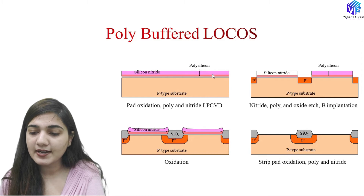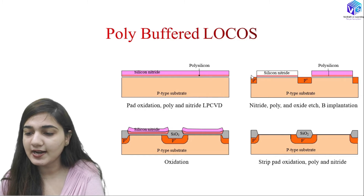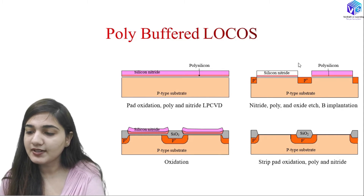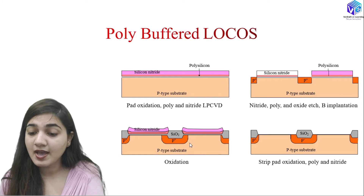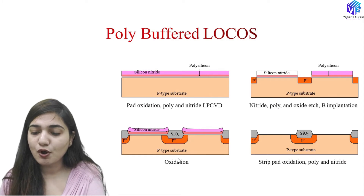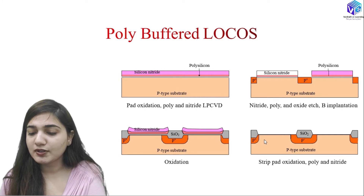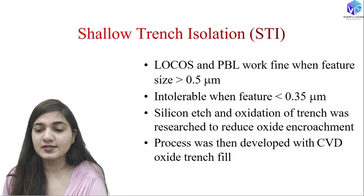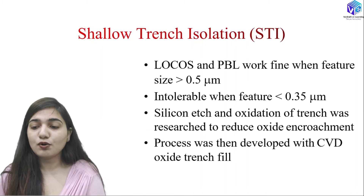In poly-buffered LOCOS we have: pad oxidation, then polysilicon deposition, then silicon nitride deposition. After that we etch the nitride at the particular location using photolithography. Then we perform the isolation implantation, then oxidation — and you can see the bird's beak problem is significantly reduced. After that we strip the pad oxide, polysilicon, and nitride layer. This is how isolation is formed with the poly-buffered LOCOS process.